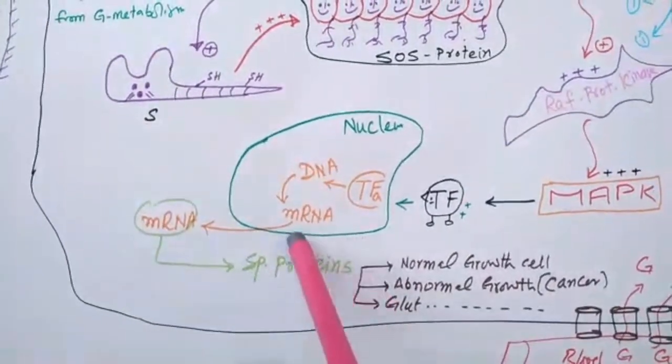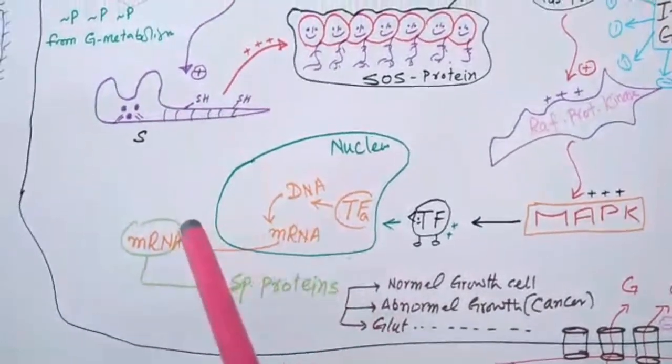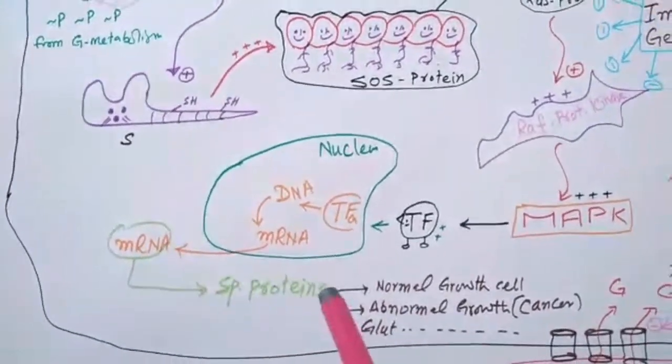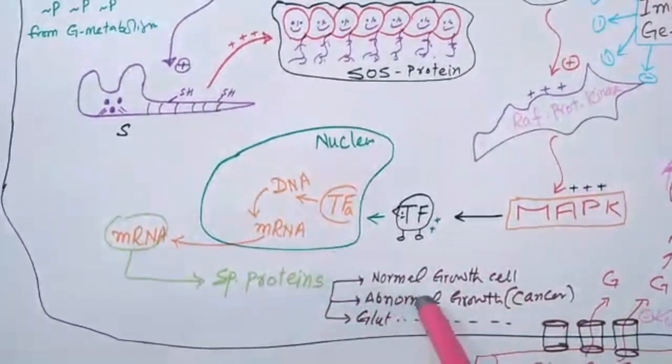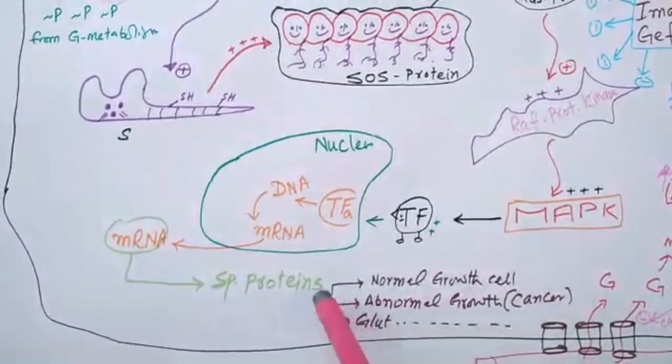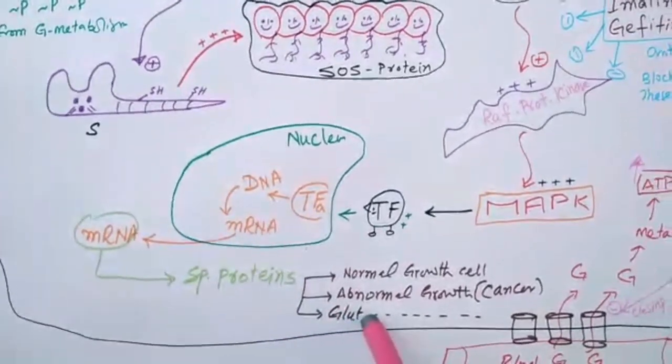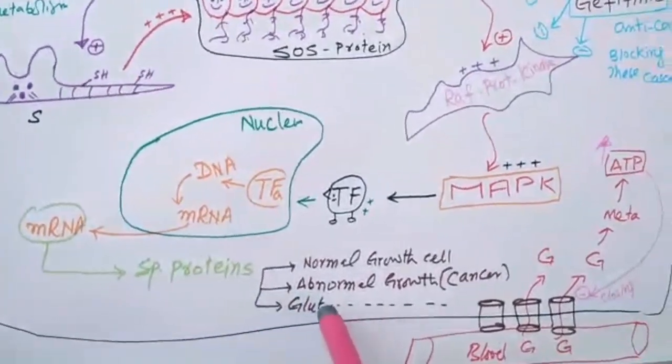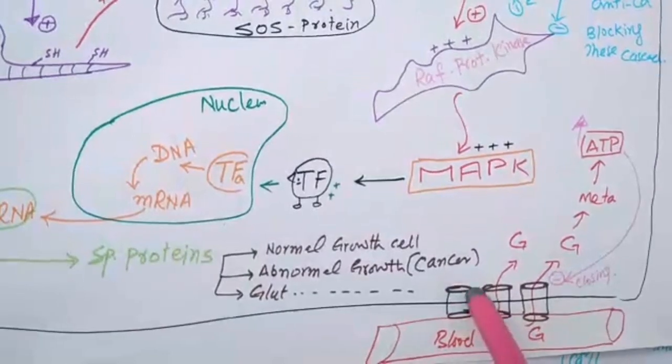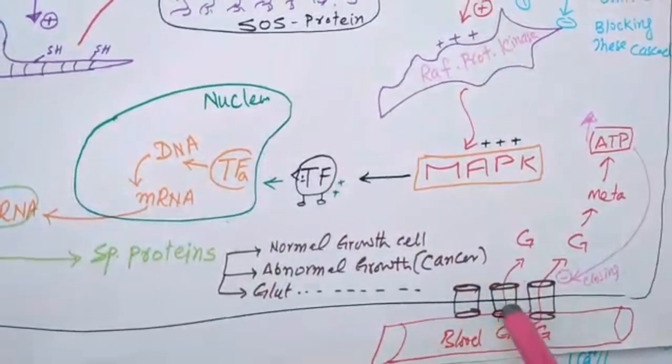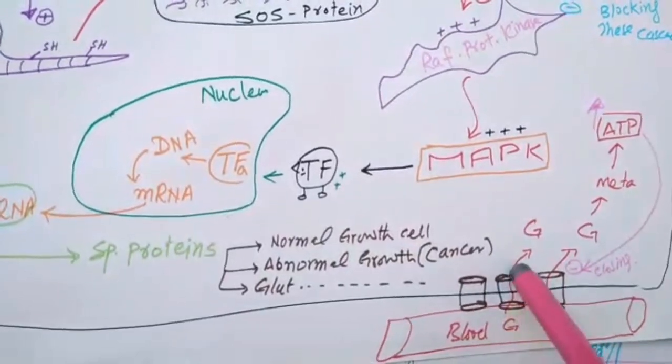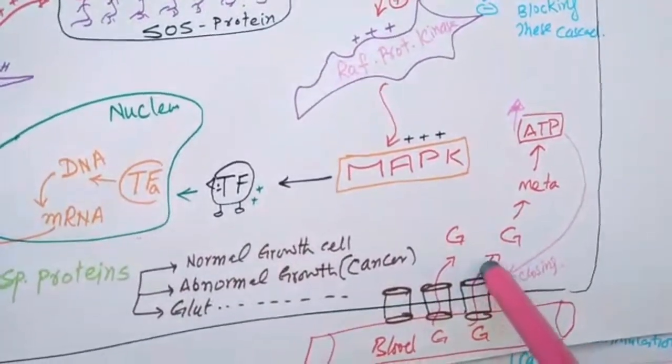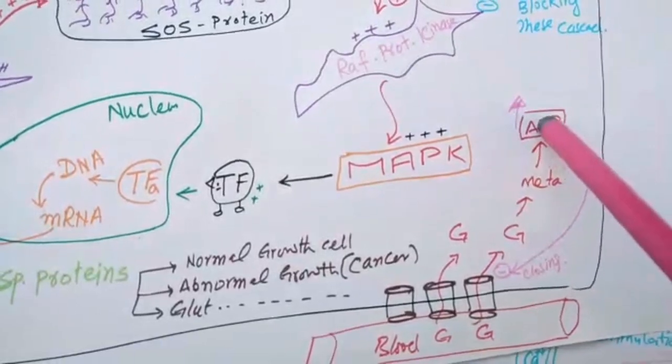These special proteins may be of various types, depending upon the type of agonist binding. They may be normal cell growth or body growth. They may be abnormal growth cell, that is cancer. They may be GLUT transporters. These GLUTs are transplanted at the cell surface, and glucose is internalized from the blood into the cell. Now, there is glucose metabolism and formation of ATP.